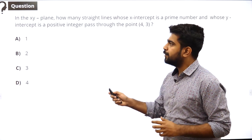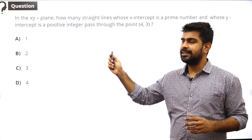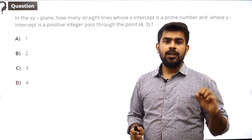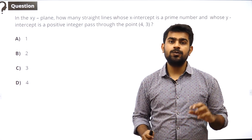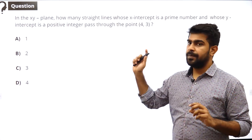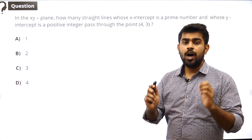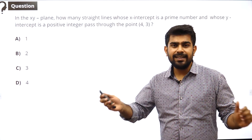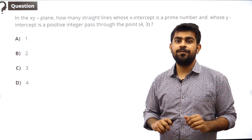The first question is right over here. In the xy plane, how many straight lines whose x-intercept is a prime number and whose y-intercept is a positive integer pass through the point (4, 3)? This is not directly PNC — it has something to do with coordinate geometry and properties of numbers as well.